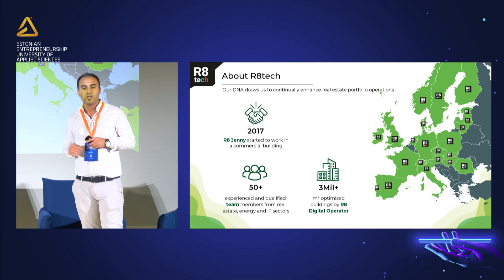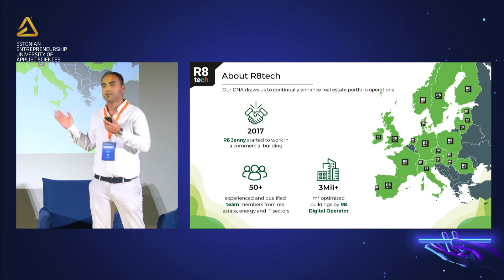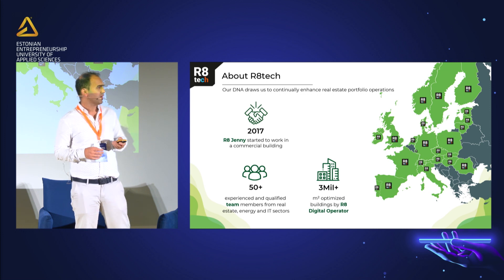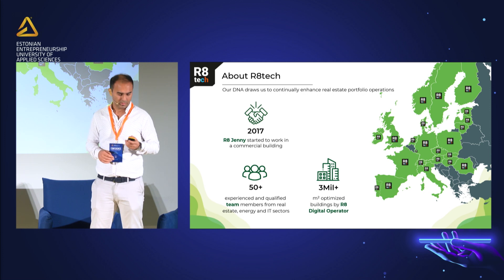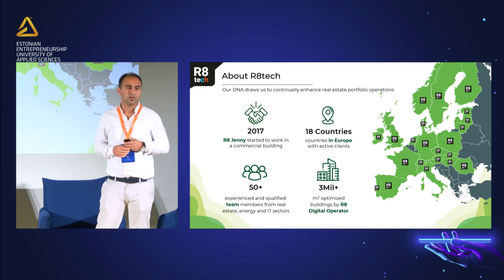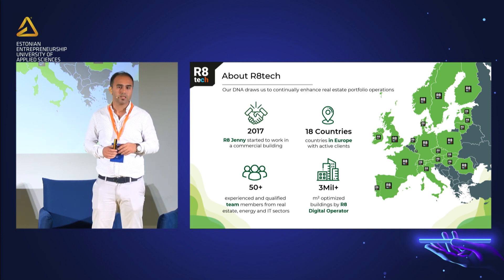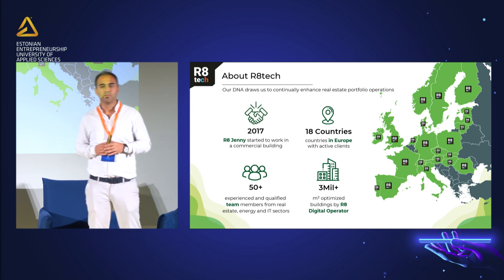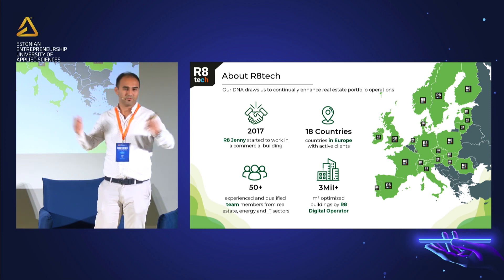Right now we are serving around 3 million square meters with AI. This building is around 15,000 square meters, so you can do the math on how many buildings we're talking about. We are currently in 18 countries — AI is working in Oslo, Helsinki, Stockholm, Lisbon, Barcelona, and Paris. The AI should be scalable enough that everybody enjoys it, not only Estonians but worldwide.